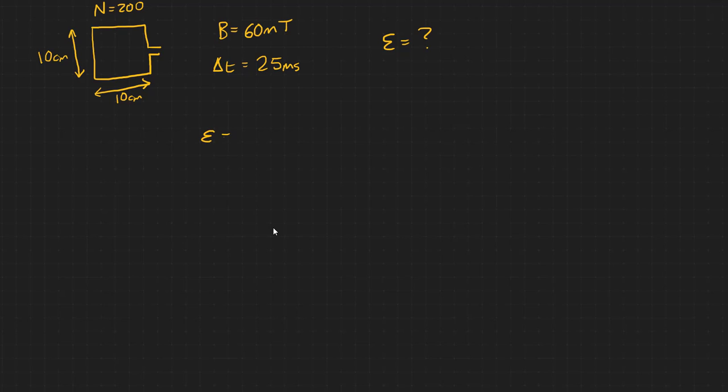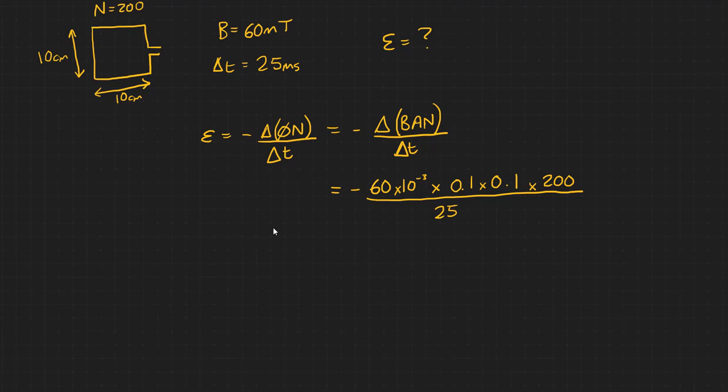So we know that the EMF is equal to minus the rate of change of flux linkage. And in terms of B, that gives us B, A, N over delta T. So substituting in, minus 60 milliteslas multiplied by 0.1 times 0.1 to give us our area, multiplied by 200 turns, divided by 25 milliseconds. That gives us an EMF of 4.8 volts.